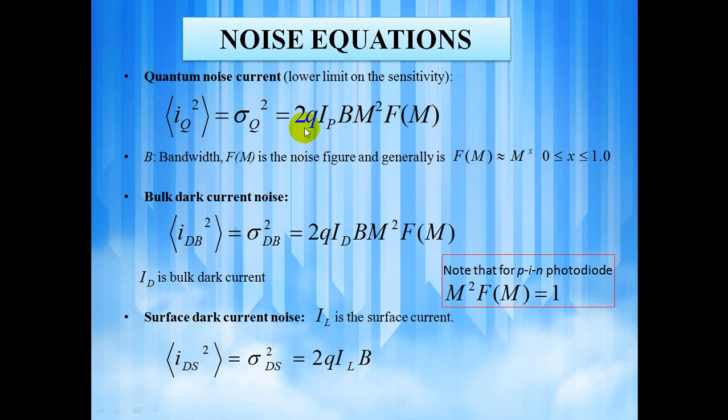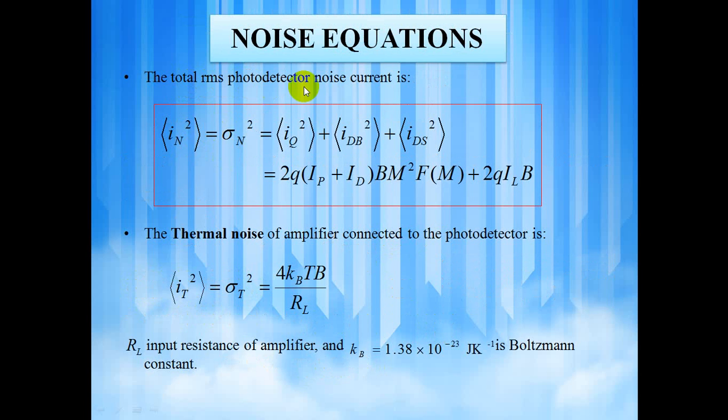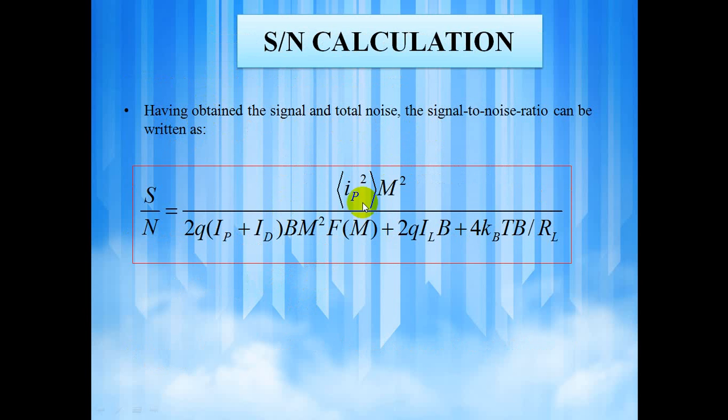Thermal noise is the spontaneous fluctuations due to the thermal interaction between the electrons and the vibrating ions in the conduction medium and it is especially prevalent in resistors at room temperature. Quantum noise current is given by twice q ip v m square fm where q is the charge of electron, ip is the photocurrent, b is the bandwidth of photodetector, m is the multiplication factor, fm is the figure of merit. Bulk dark current noise is given by twice q id b m square fm where id is the bulk dark current. Surface dark current noise is given by twice q i l b where i l is the surface current. Therefore, the total rms photodetector noise current is the sum of the quantum noise current, bulk dark current noise and surface dark current noise. And the thermal noise is given by 4 kb tb by r l where kb is the Boltzmann's constant, r l is the input resistance of an amplifier, t is the temperature and b is the bandwidth. The signal to noise ratio is given by the product of the square of the photocurrent and the square of the multiplication factor, to the sum of the square of the quantum noise current, bulk dark current noise, surface dark current noise and thermal noise current.